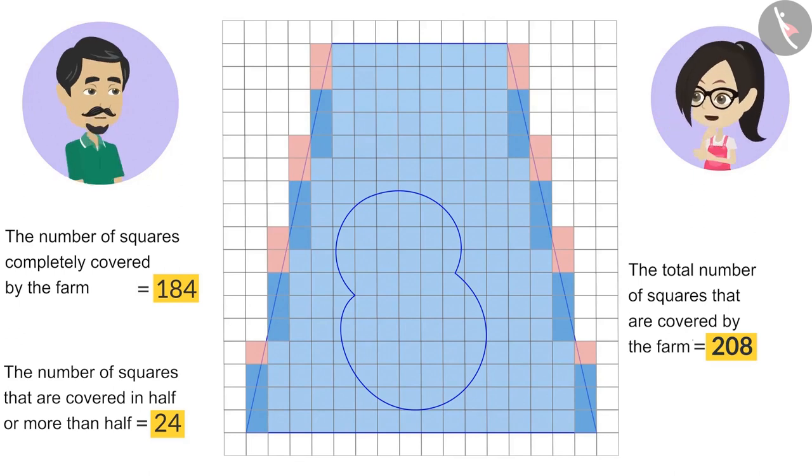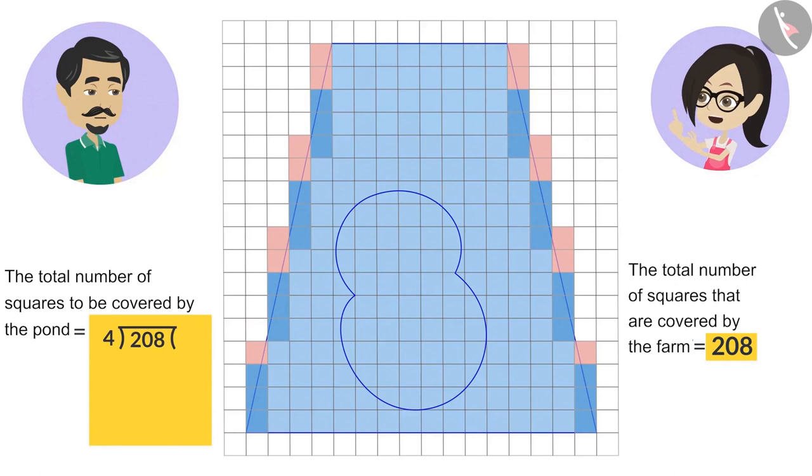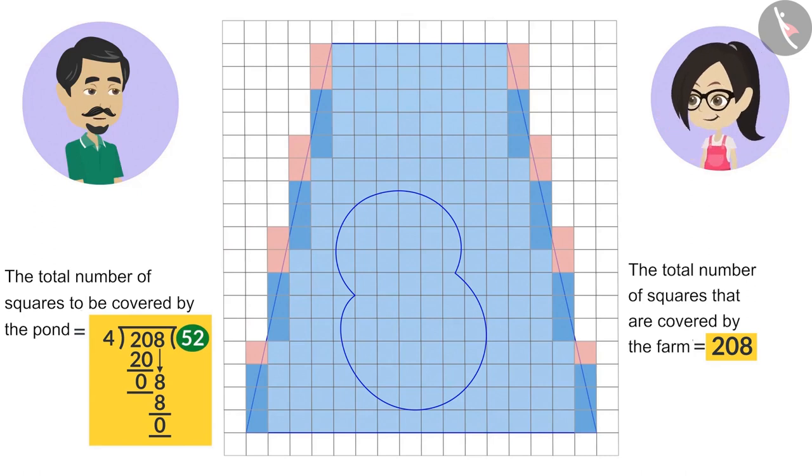Now, you want the pond to be built in one-fourth of the farm, right? That means the pond should cover 208 divided by 4 squares. That is, if this pond covers almost 52 squares, then we can say that this pond is one-fourth of the farm.